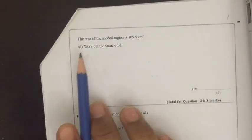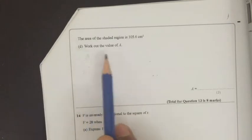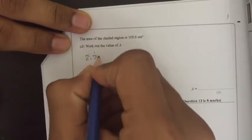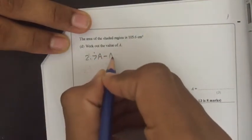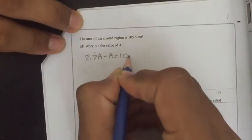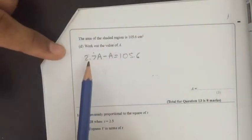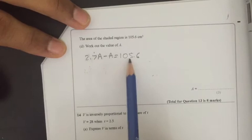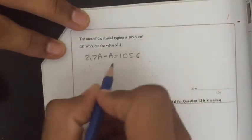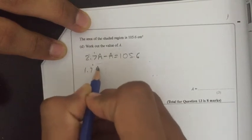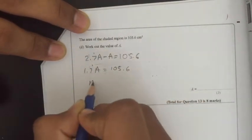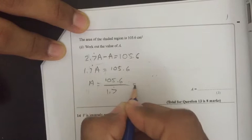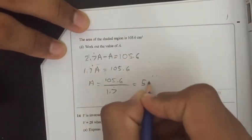So the area of the shaded region is 105.6. Work out the value of A. So as we know, 2.7 recurring A minus A equals 105.6. Because 2.7 recurring is K. So KA minus A is the shaded region, which is 105.6. So this is the same as saying 1.7 recurring A equals 105.6. So A equals 105.6 over 1.7 recurring, which gives us 59.4.